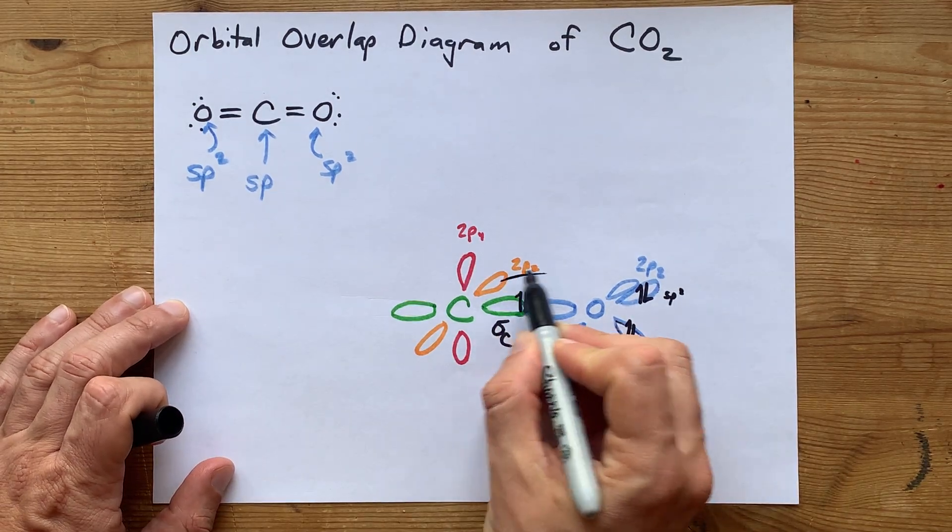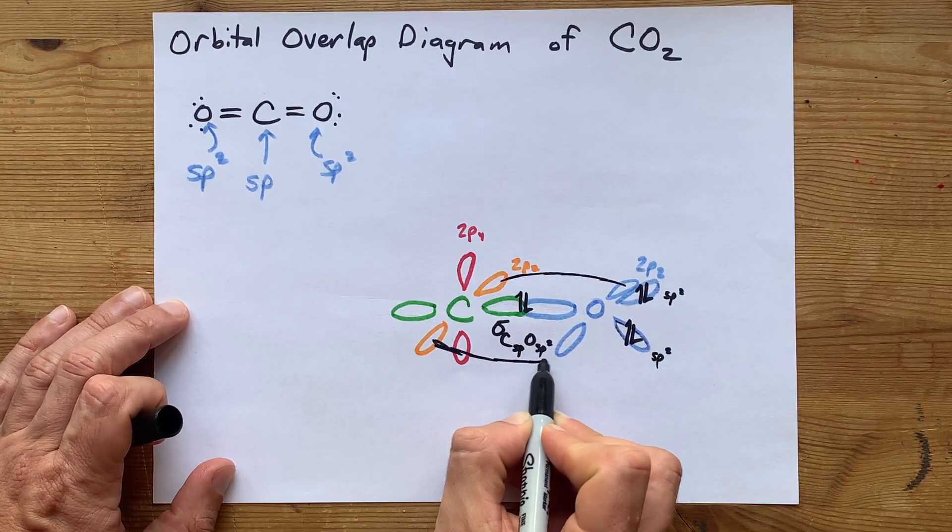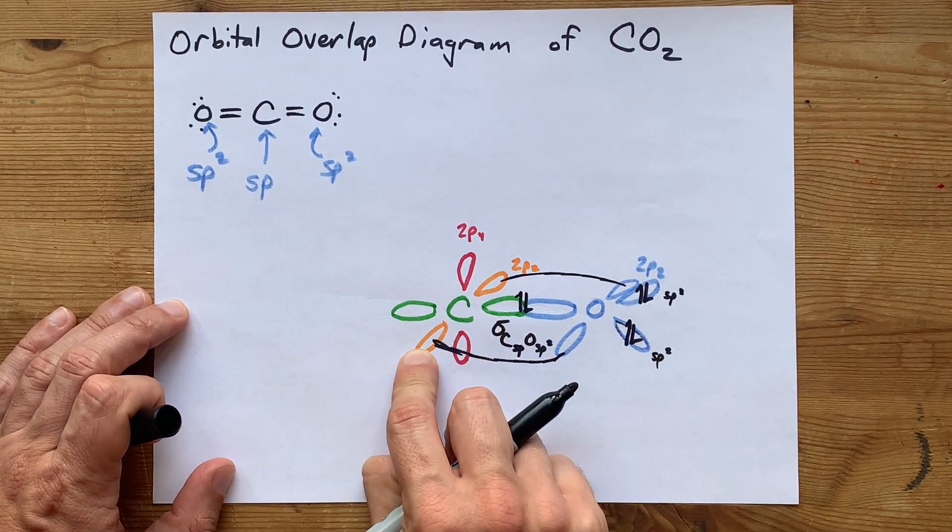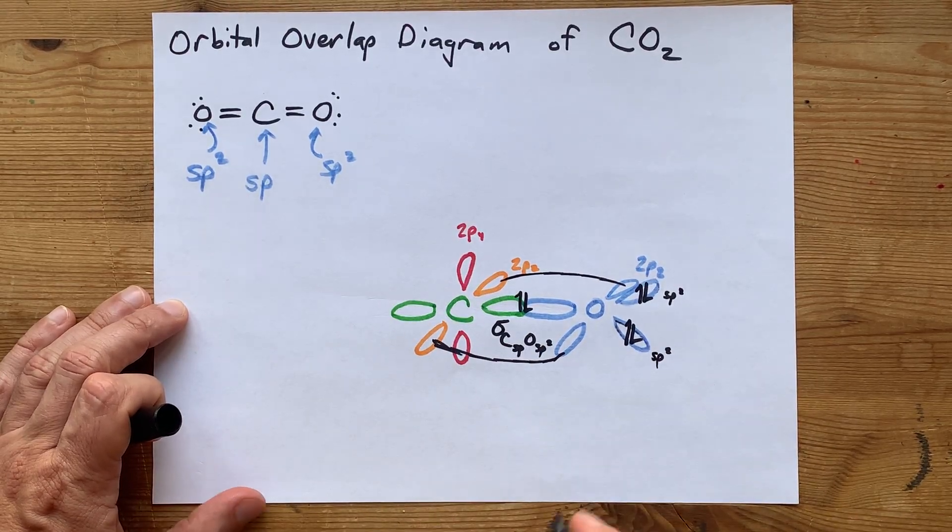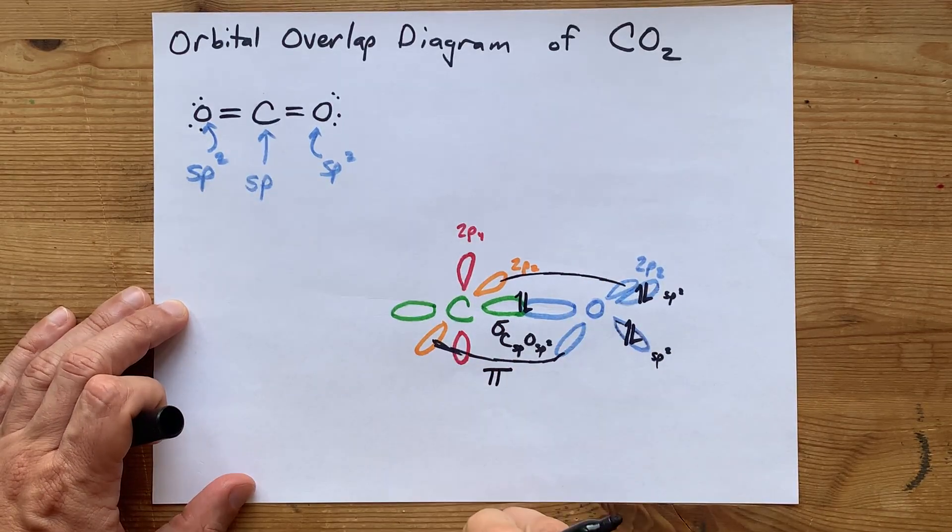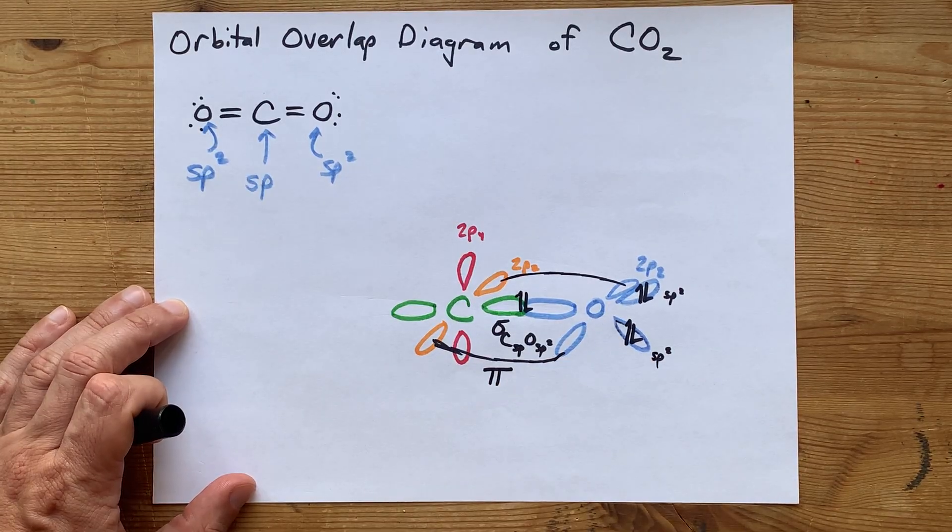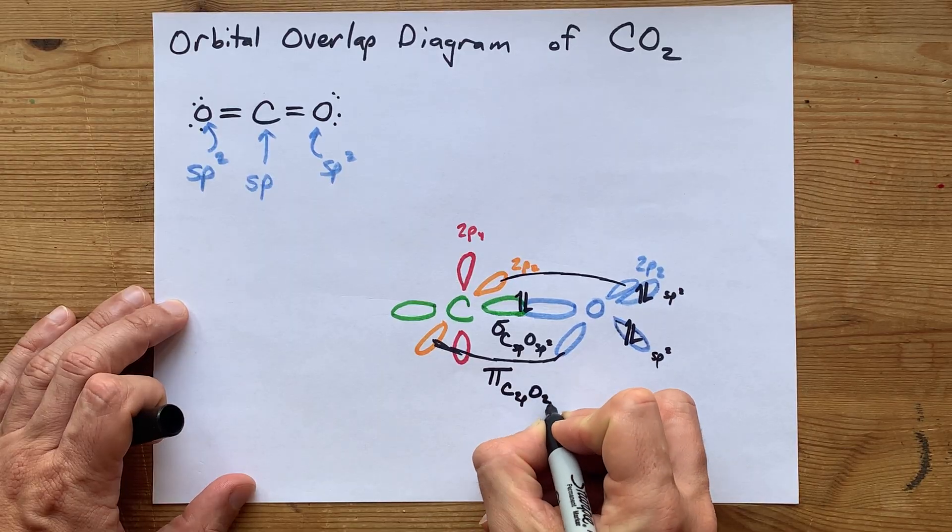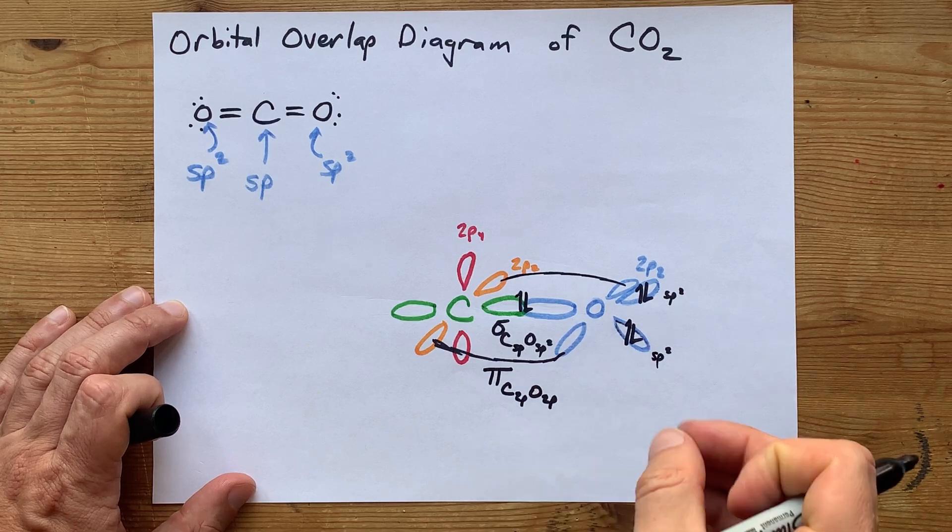And then you have a side-to-side overlap between carbon's unhybridized 2p orbital, well, one of them, and oxygen's unhybridized 2p orbital. That is a pi bond, because it's a side-to-side overlap between unhybridized orbitals. I'm going to write it down as pi, carbon-2p, oxygen-2p. Those are just regular orbitals, because they did not hybridize.